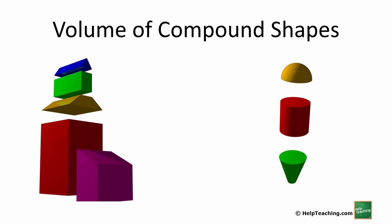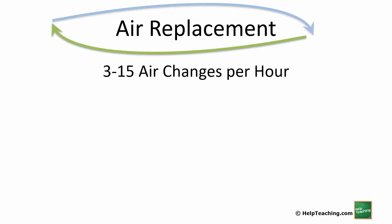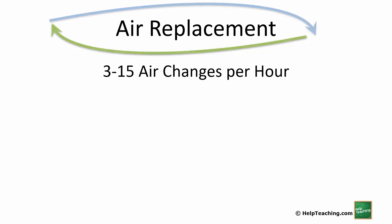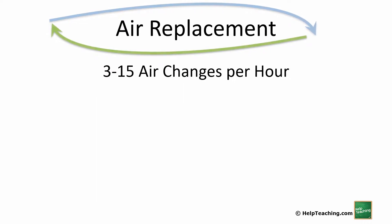Let's look at air replacement. Air replacement means that the volume of the air in a room needs to be changed every so often, and depending on what that room is used for and the size of it, that may vary. Different building codes vary between states, provinces, and countries, so you'll need to check those — but they generally range between 3 and 15 air changes per hour.